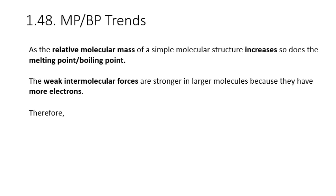What about the trends in melting and boiling point? For point 1.48, as the relative molecular mass of a simple molecular structure increases, so does its melting or boiling point. This is because the larger a molecule is, the stronger the weak intermolecular forces are, so the more energy it takes to overcome them. This is actually because larger molecules have more electrons — something you'll explore more at A-level. So hydrogen, H2, has a very low melting and boiling point because it only has one electron in each outer shell, whereas bromine, another diatomic molecule, has a much higher melting and boiling point because it has many more electrons. At this level, it's acceptable to refer to relative molecular mass, but the underlying reason is the number of electrons.